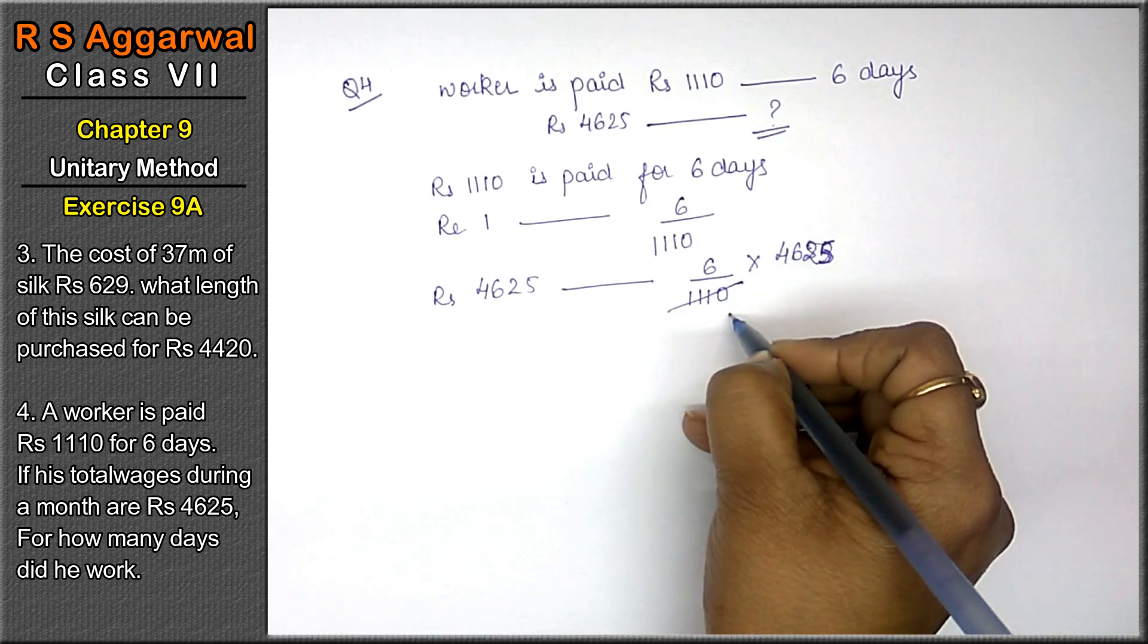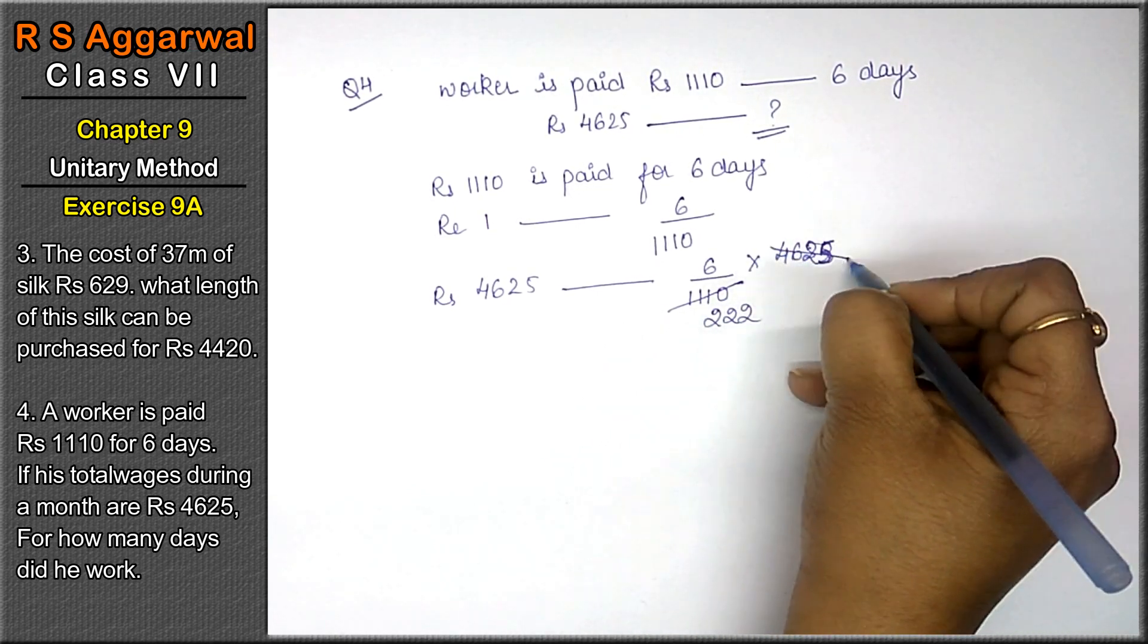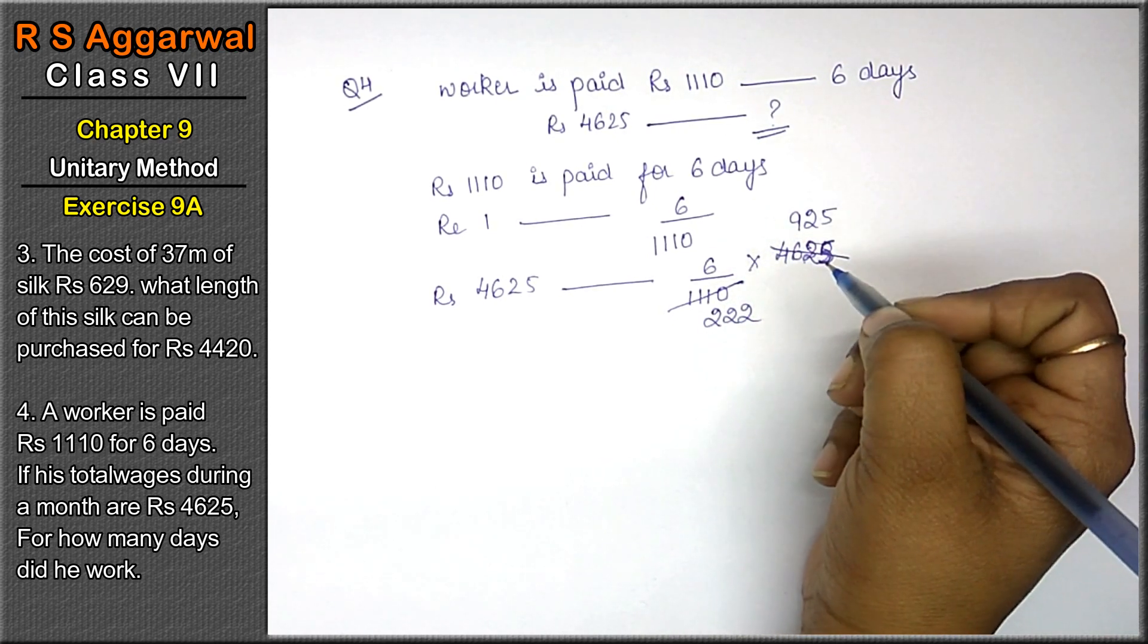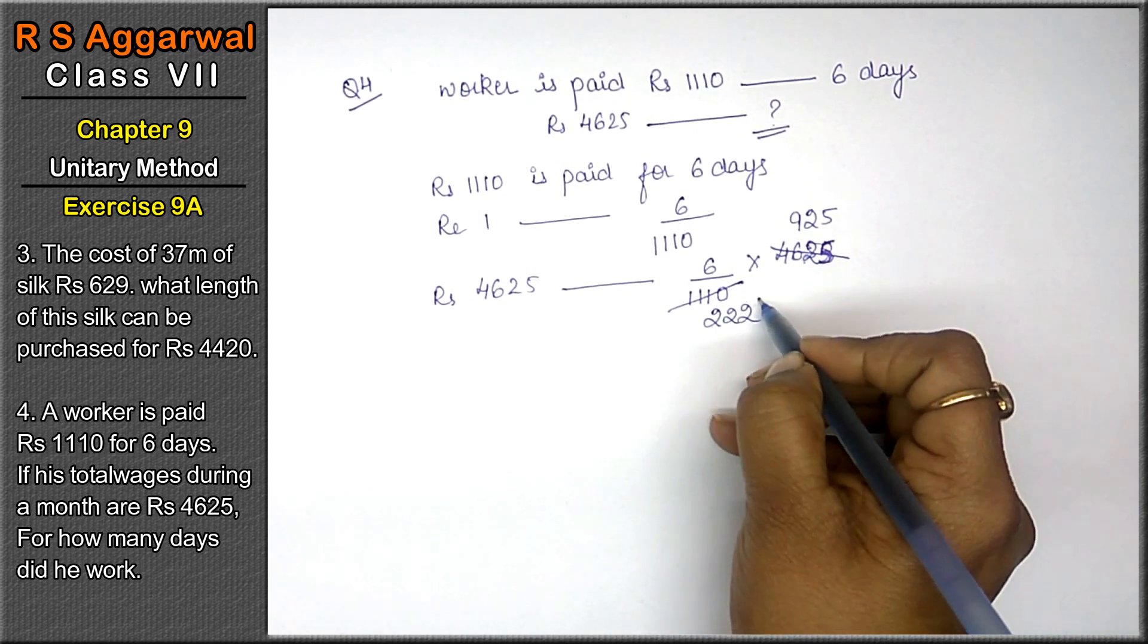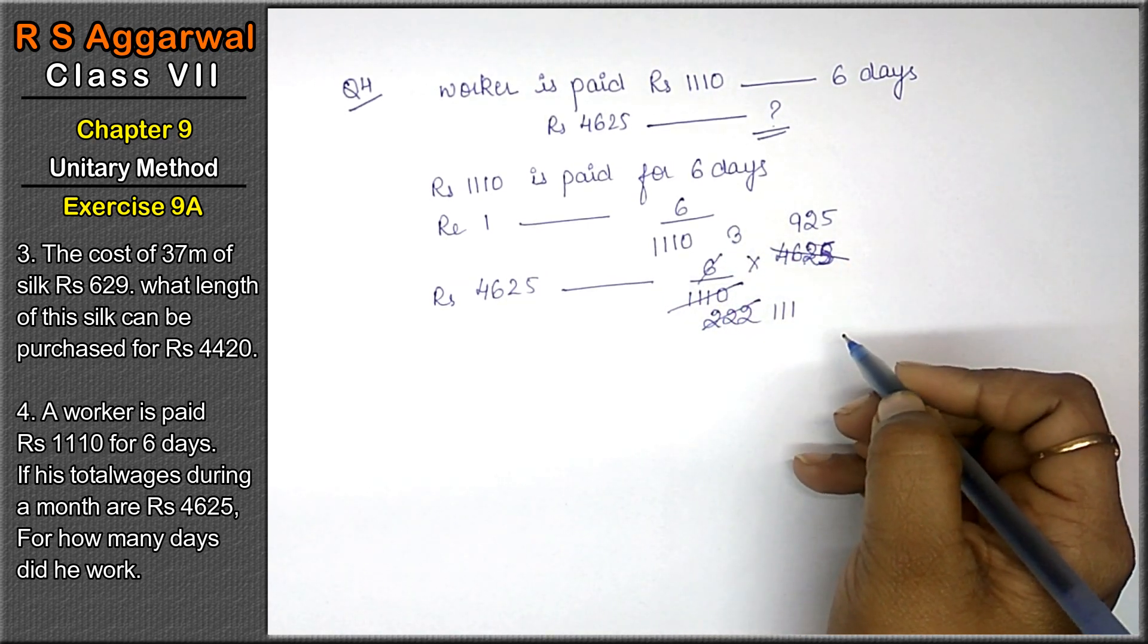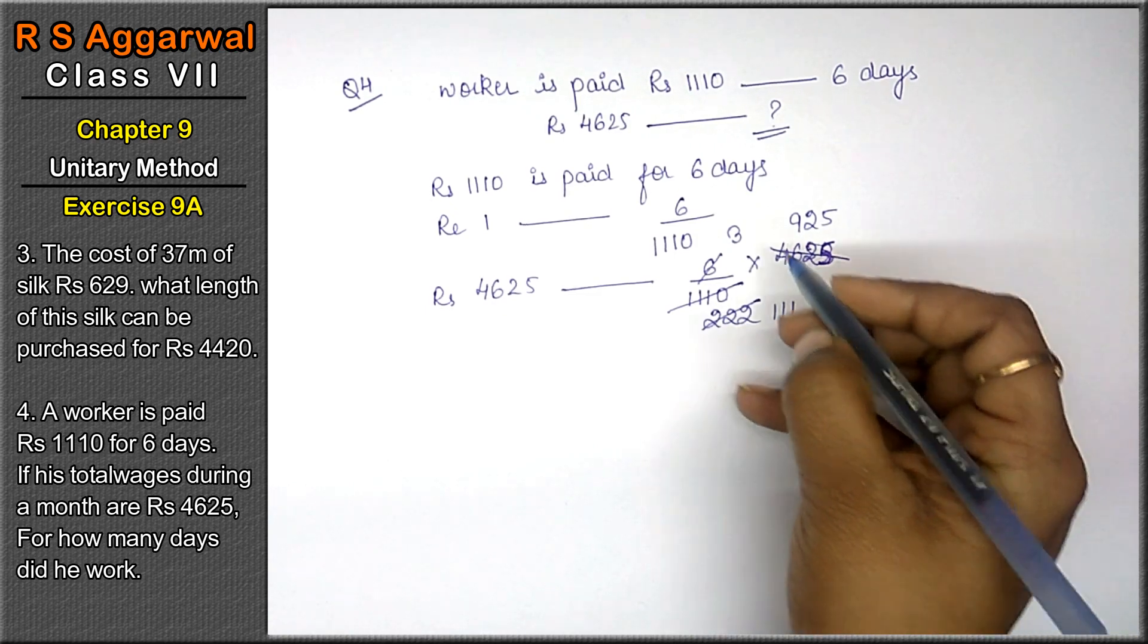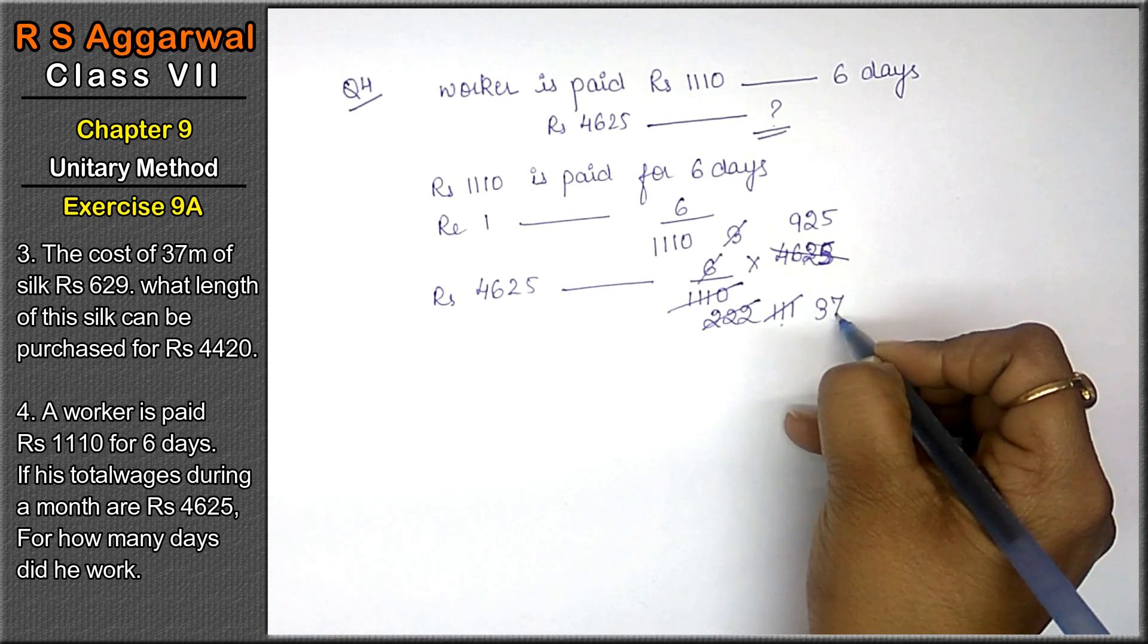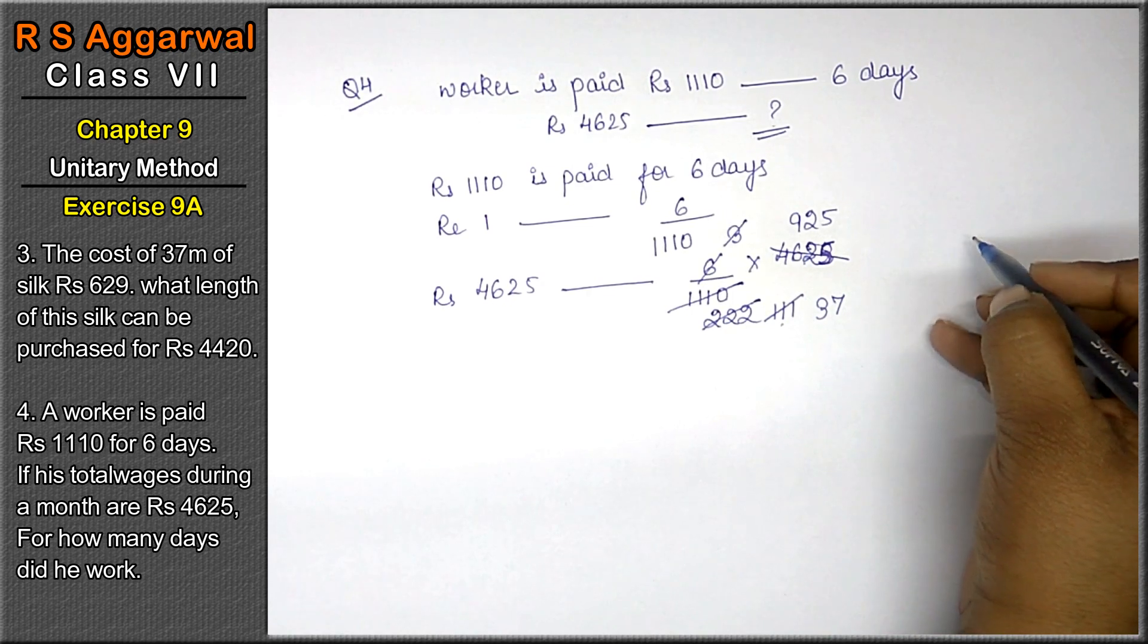Now 5 से cancel किया. After dividing by 2 and then by 3, we get simplified values. Let's see whether we can deduct it by 37 or not.